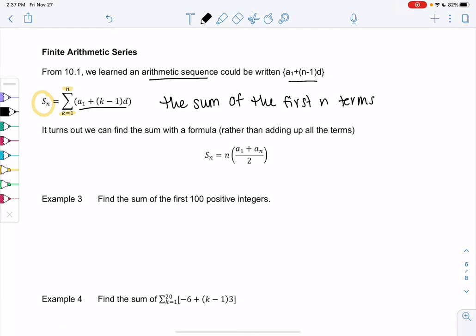One option is we could just add them up. Whatever these terms are, add them up. But if there's like hundreds of terms, it's going to take us a long time. So we have this cool shortcut formula. We can find the sum of the first n terms.